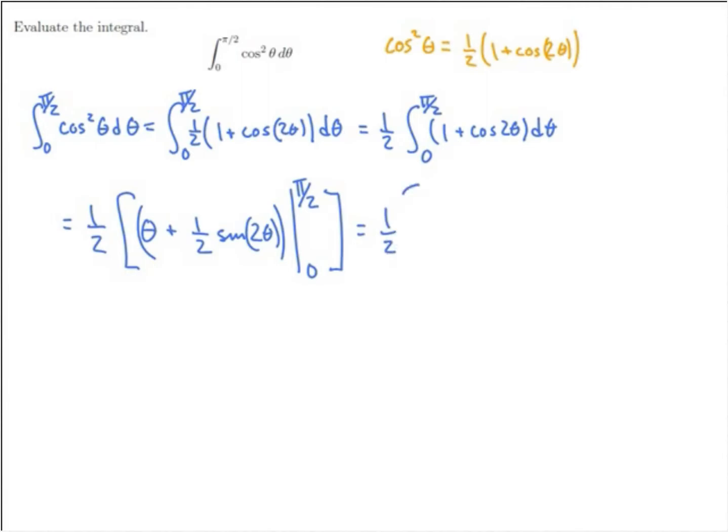One half times, I plug in pi over 2, I have pi over 2 plus 1 half sine of, now it's 2 theta, so pi over 2 plugged in there is sine of pi. And then plugging in 0, I have 0 plus 1 half sine of 0.